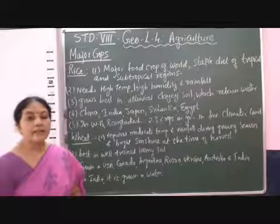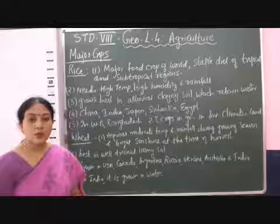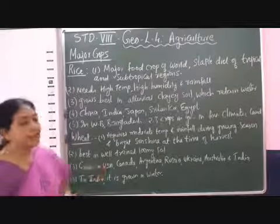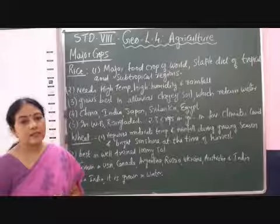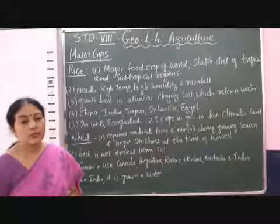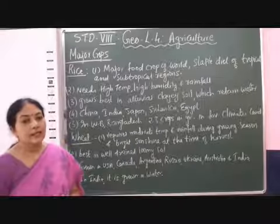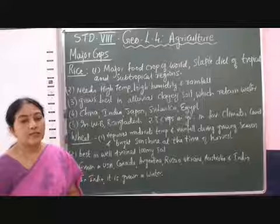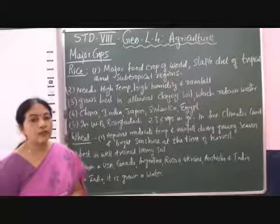In India, wheat is a Rabi crop — it is grown in winter. It requires moderate temperature, that is almost 20 to 24 degrees Celsius, which is enough for the growth of wheat.